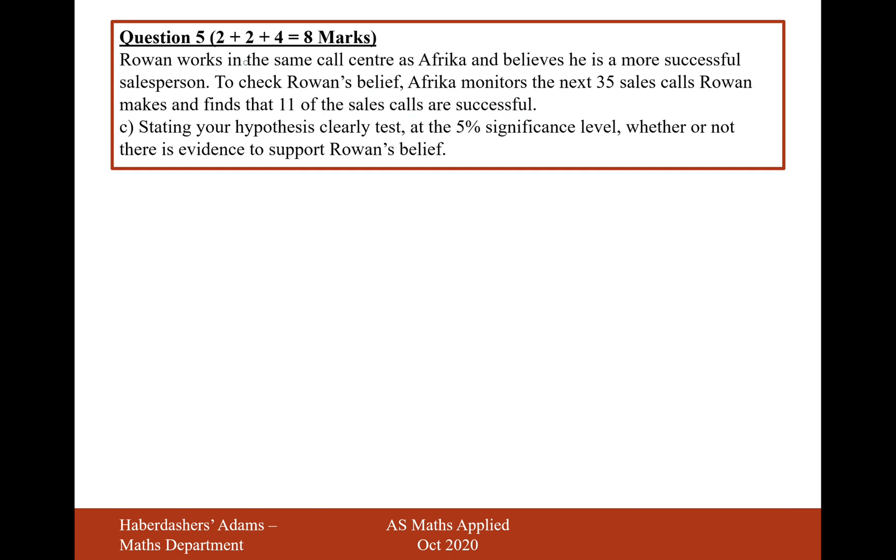Let's move on to part C. Rowan works in the same call centre as Africa and believes he is more successful salesperson. To check Rowan's belief, Africa monitors the next 35 sales calls Rowan makes and finds that 11 of these sales are successful. Stating your hypothesis clearly, test at the 5% significance level whether or not there is evidence to support Rowan's belief. So the first thing we need to do then is do our little H0, H1. The probability is going to be equal to 1 sixth or the probability is going to be greater than 1 sixth. And we want to test the 5% significance level. Test is 0.05.